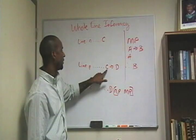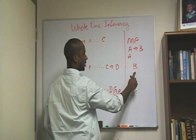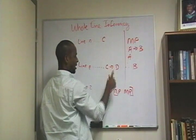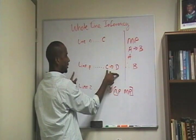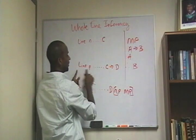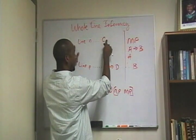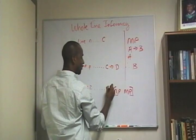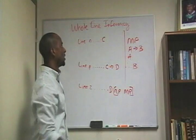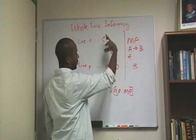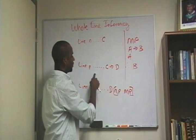I can get D by applying modus ponens to these two lines. I have C. I have if C, then D — which follows the same format: if A, then B; A, therefore B. If C, then D; C, therefore D. So what I've done is I've taken one line — remember, we're doing whole line inferencing — and I've said, well, if I have if C then D, I have C, therefore I can have D isolated by itself. Now this D becomes isolated by itself, and I can use that later in my proof.